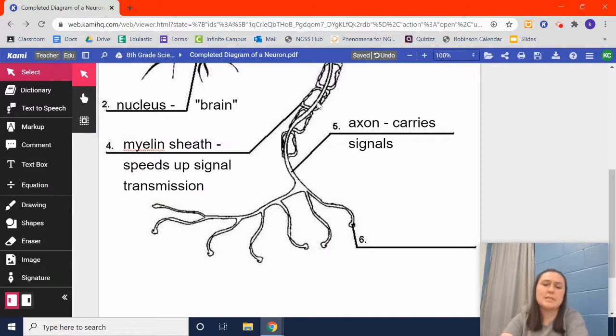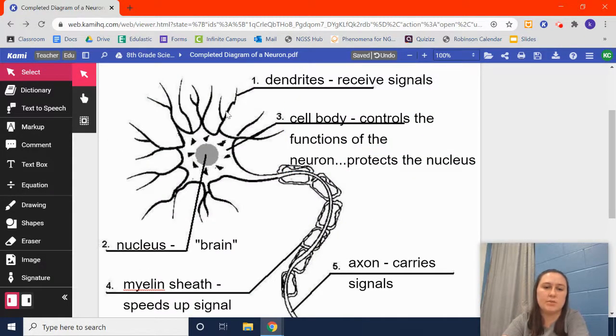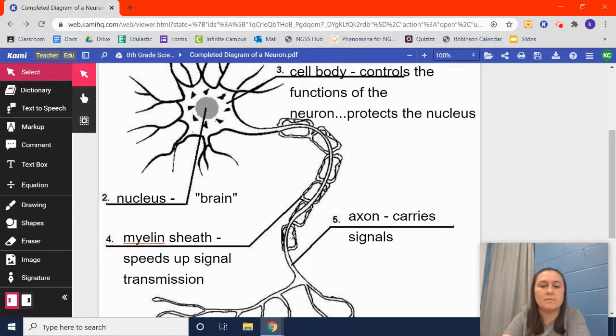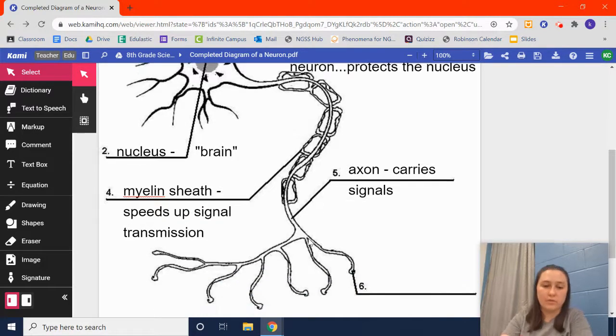So, the last part. The signal, again, it comes in through the dendrite. It moves down through there. It goes through the cell body into the nucleus. Nucleus processes what's happening. It sends the response that needs to happen through the axon. It moves quickly thanks to the myelin sheath surrounding it, speeding up how fast the signal is moving. And then it reaches the end of the neuron.